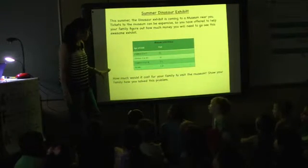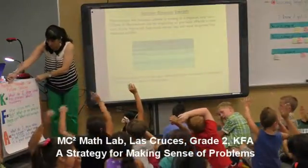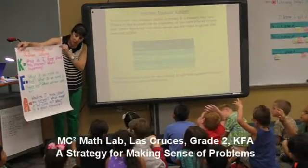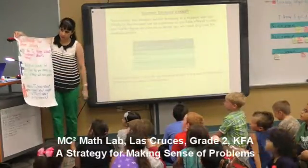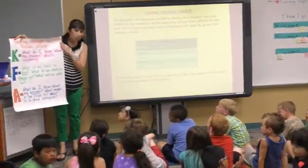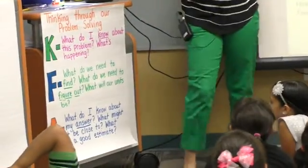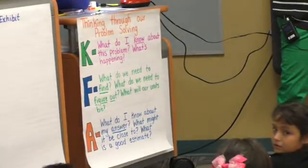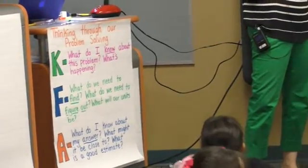So now we want to know how much it would cost for your family to visit the museum. We're going to have to think about how we're going to solve this problem. There are three things we need to keep in mind, so we are going to do a KFA chart. The K part is: what do I know about this problem? We know it's going to cost money. Who's going to cost ten dollars? Your parents.